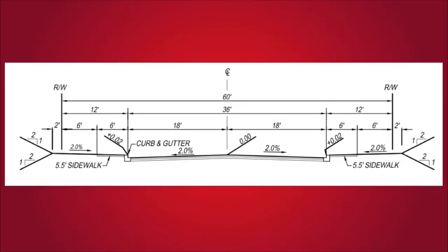Here's another example of a street section from the actual plan set. Similar to the detail shown earlier, but this one has a lot more detail and actual hard dimensions. A couple of things to notice: in the middle of the street you can see how it comes to a point — that's called the crown of the street — and it slopes down on each side at a two percent grade. The CL stands for center line of the street and RW stands for right-of-way. You have a six-foot sidewalk and then six feet from the back of sidewalk to the right-of-way, plus another two-foot buffer before it slopes up or down at a two-to-one slope.